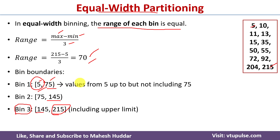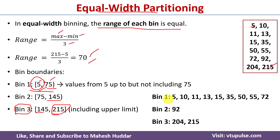Now we will calculate the values present in each bin. For the first bin, the values are between 5 and 75, so we get values from 5 to 72 — all within the limit. For the second bin, the boundaries are 75 and 145, so the value is 92. The third bin range is 145 to 215, so the values for the third bin are 204 and 215. This is how we calculate bins using equal width partitioning.